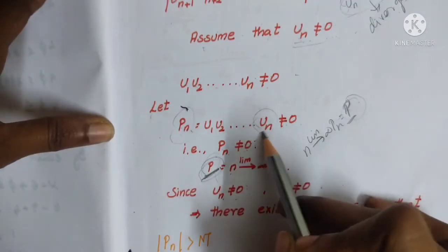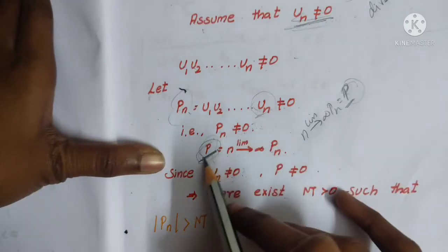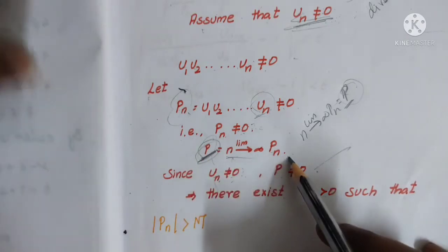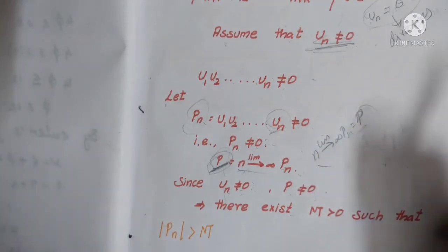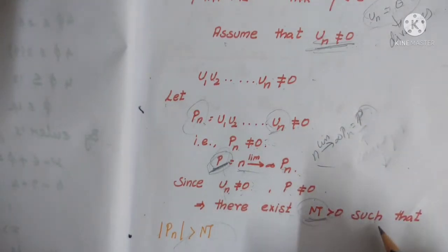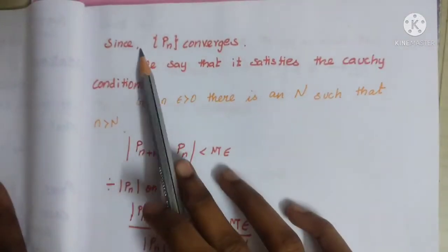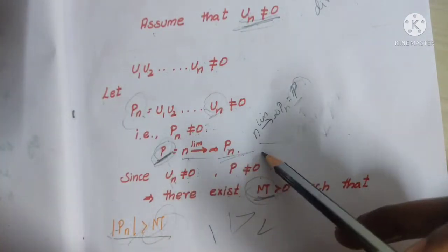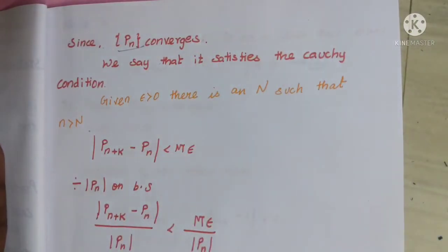Since Pn converges to a limit p, and Un is not equal to zero, we say p is not equal to 0. So the limit exists and this converges. Convergence means it is bounded, so there exists M greater than 0 such that Pn is greater than M for n greater than or equal to some value. Since Pn converges, it satisfies the Cauchy condition.